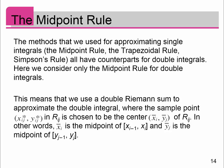The methods we use for approximating single integrals — the midpoint rule, the trapezoidal rule, the Simpson's rule — all have counterparts for double integrals. We're going to only consider the midpoint rule for double integrals, which means we use a double Riemann sum to approximate the double integral, but we choose our sample point to be the center.